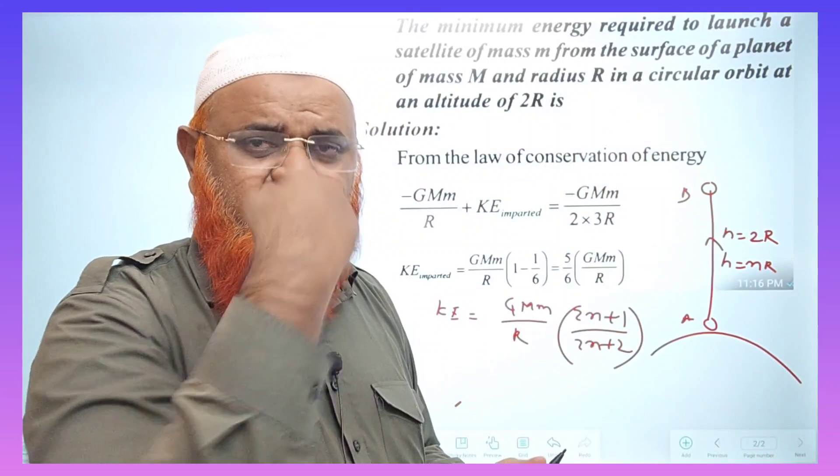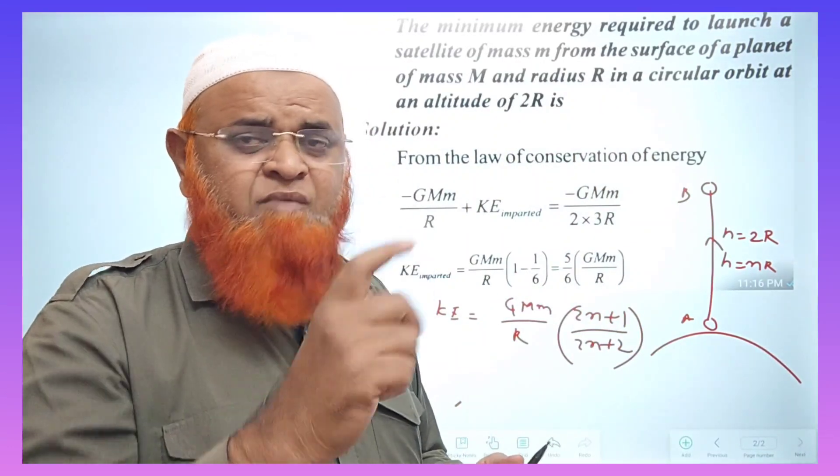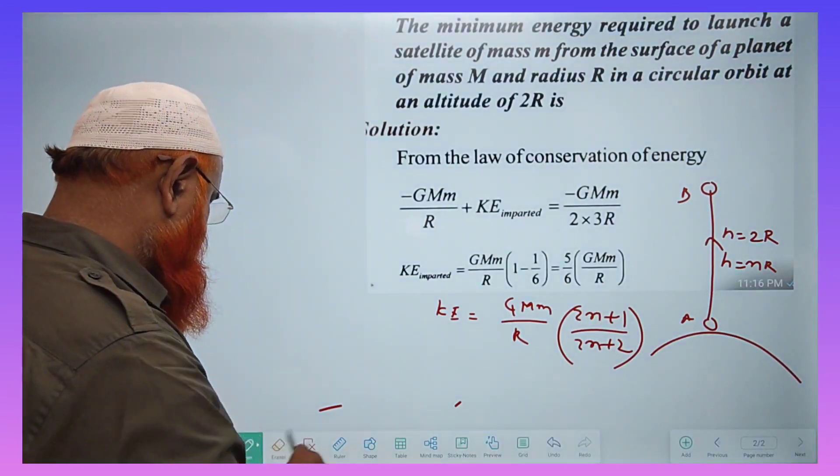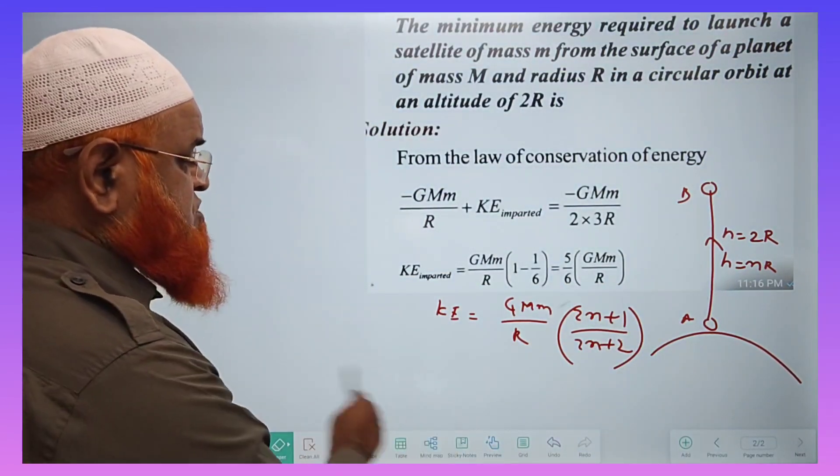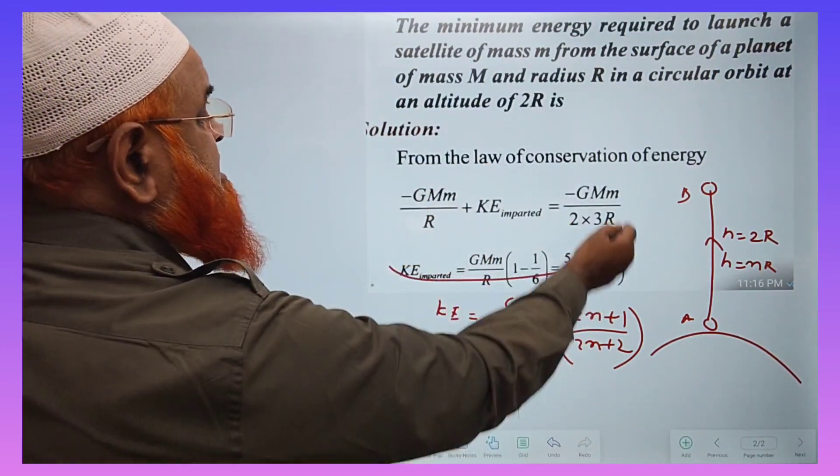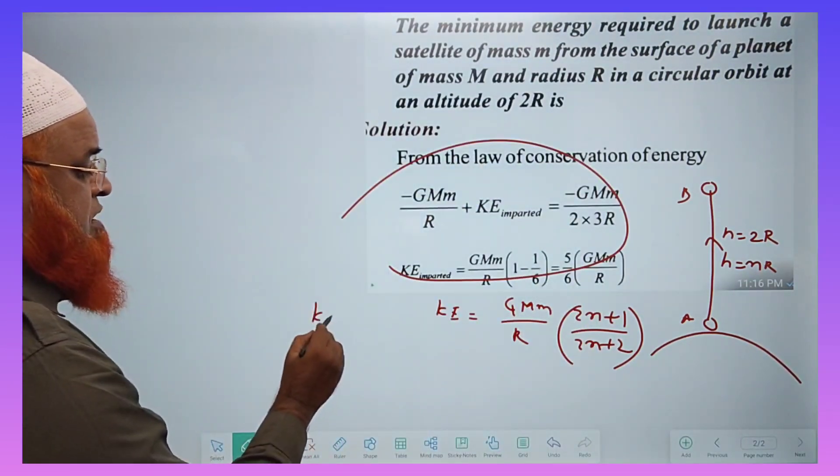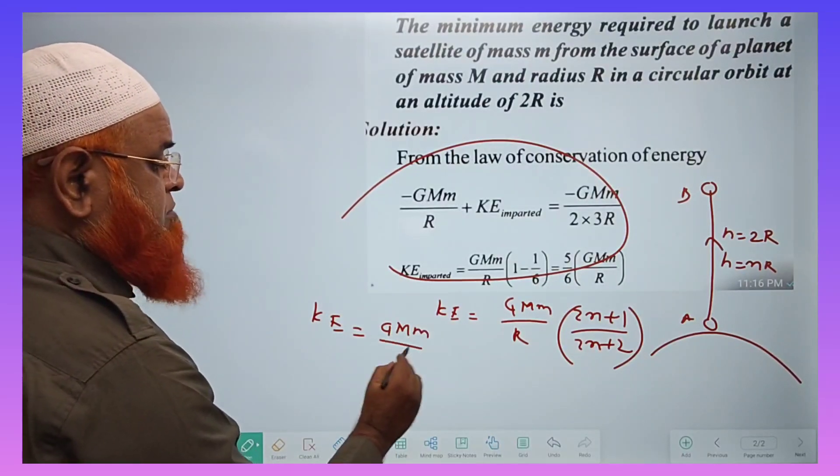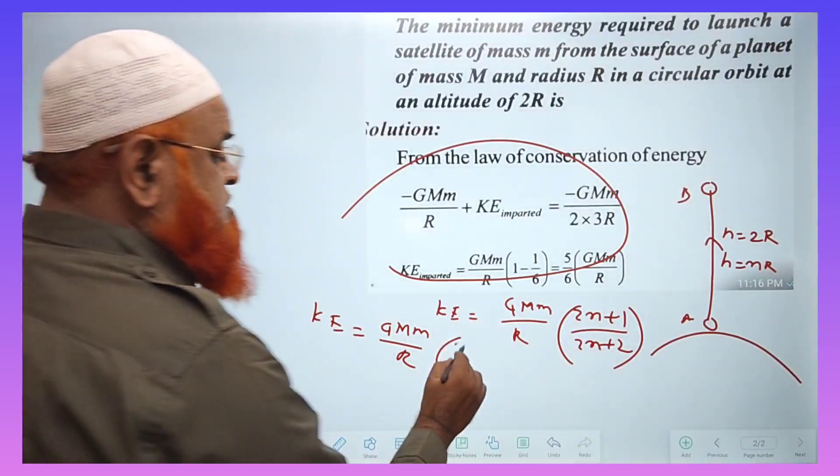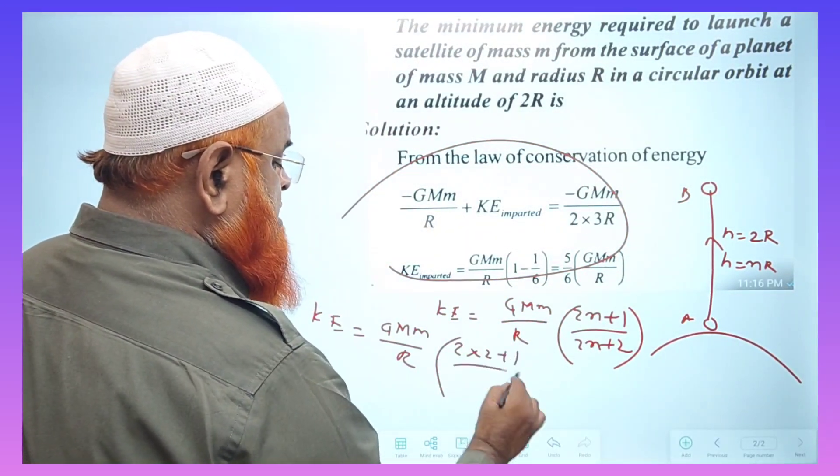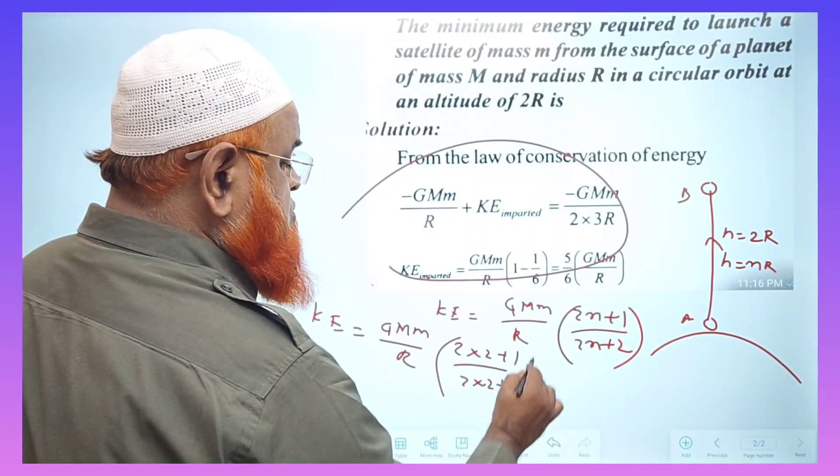If it is thrown to a height of 3R, 4R, 5R, N will become 3, 4, 5 here. That's it. That's a very simple strategy here. Now, let me solve this problem. Very simple. Just see here. Instead of doing all these lengthy processes, you can just apply the formula and get the answer. That is, GMm by R. You have to write 2 into 2 plus 1 by 2 into 2 plus 2.